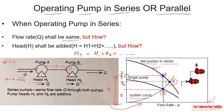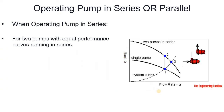Centrifugal pumps in series are used to overcome larger system head losses than one pump can handle. For example, if using only one pump results in too much head loss, operating multiple pumps in series allows you to overcome that larger system head loss. You can see on the graph how the operating point shifts when two pumps run in series compared to a single pump.